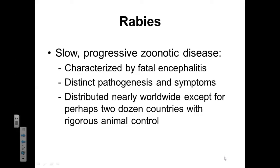By zoonotic disease, I mean that it's transmitted to us from animals. Generally speaking, we as human beings are going to contract rabies when we are bitten by an infected animal. Rabies almost always ends with fatal encephalitis, fatal swelling of the brain. There are some very distinct pathogenic symptoms associated with rabies. Rabies is a disease that's distributed worldwide and is going to result in very rigorous animal control for the protection of humans from animal bite.